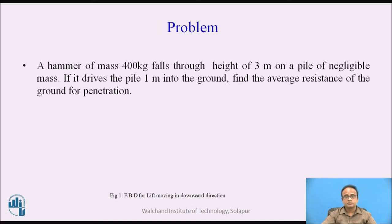Now let us solve a problem on pile hammer. A hammer of mass 400 kg falls through a height of 3 meters on a pile of negligible mass. If it drives the pile 1 meter into the ground, find the average resistance of the ground for penetration.